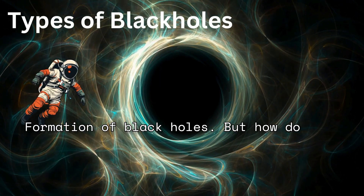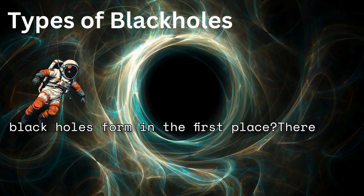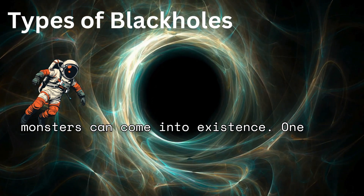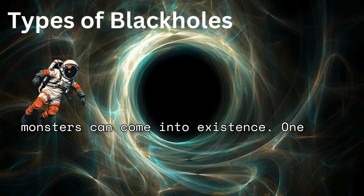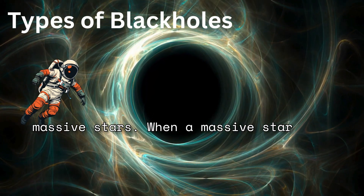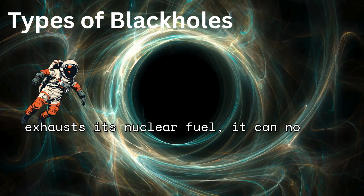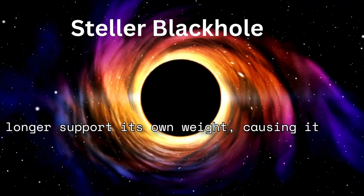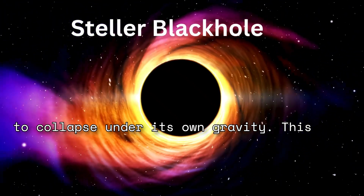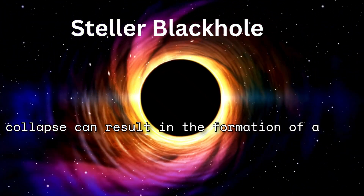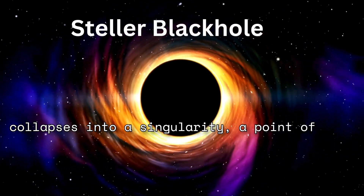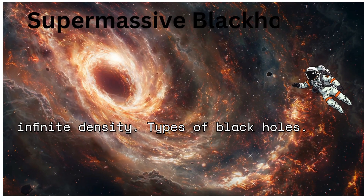But how do black holes form in the first place? There are several ways in which these cosmic monsters can come into existence. One common way is through the death of massive stars. When a massive star exhausts its nuclear fuel, it can no longer support its own weight, causing it to collapse under its own gravity. This collapse can result in the formation of a black hole, where the core of the star collapses into a singularity — a point of infinite density.